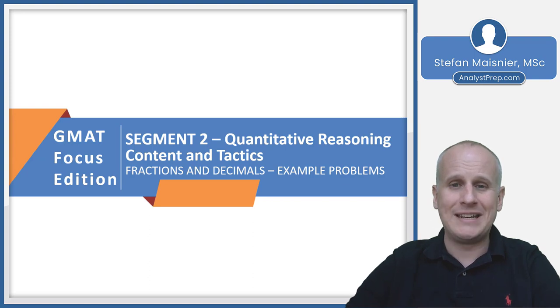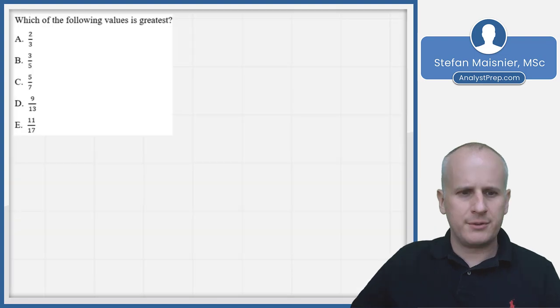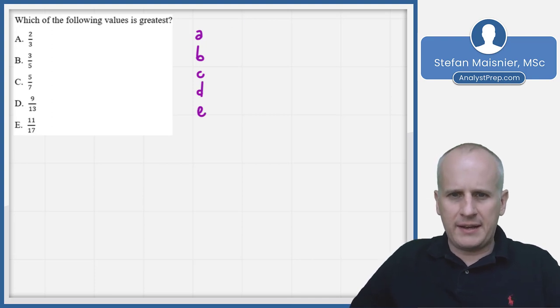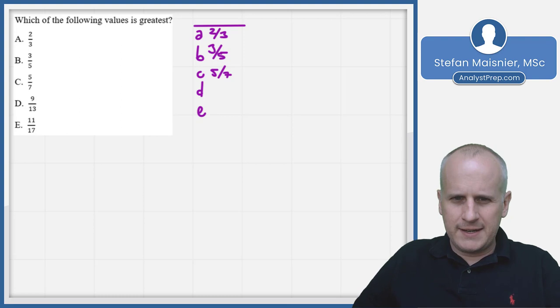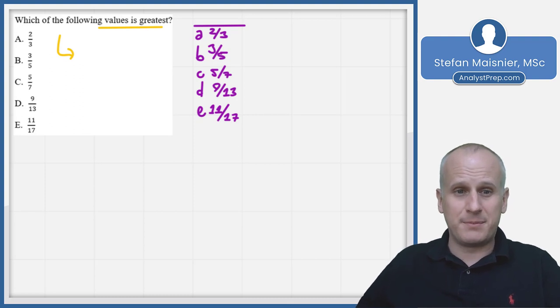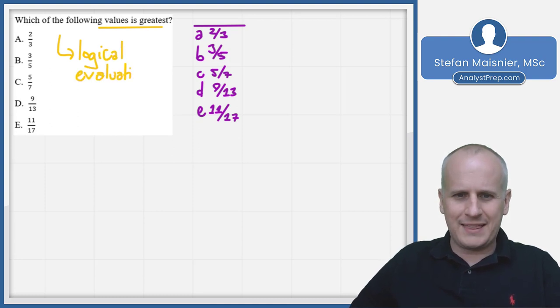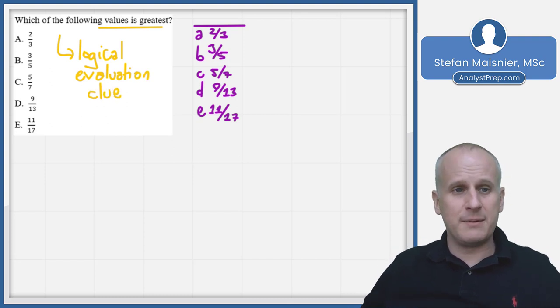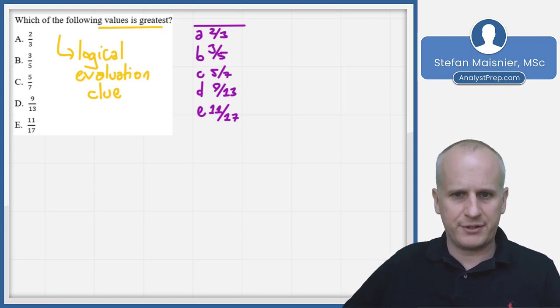Let's go to the whiteboard for example problems. Here's a sample question from the GMAT focus. Set up scratch work A through E. We have simple fractions: two-thirds, three-fifths, five-sevenths, nine-thirteenths, and eleven-seventeenths. We're asked which value is greatest. Since we're not looking for a single specific value, this is a logical evaluation clue.